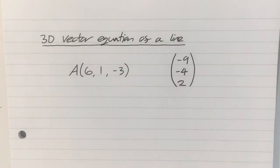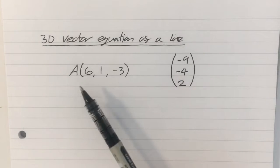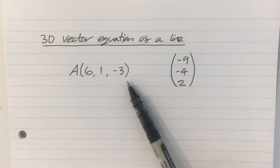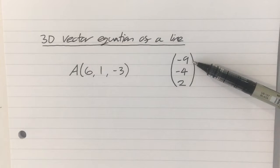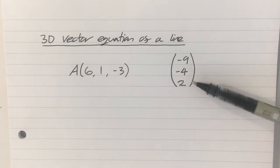Okay, so a vector equation of a line. Now we're looking at one in three dimensions. So let's say we want to find the vector equation of a line that goes through this point, 6, 1, minus 3, and is in the direction of this vector here, minus 9, minus 4, 2.